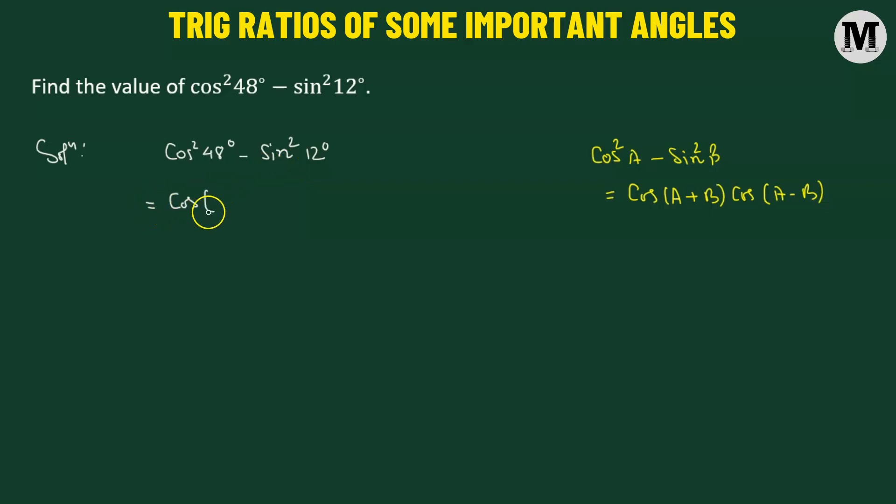And this is going to give us cosine of the angle 48 degree added to 12 degree multiplied to cosine of the angle 48 degrees minus 12 degrees.